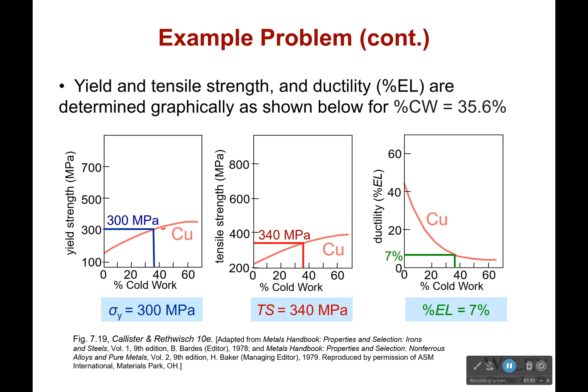All you do is go to your percent cold work, go up, and then go over. Or vice versa — if you wanted to know how much cold work you need to achieve a yield strength of 300 MPa, you would go to that point, drag the line over, go down from where you hit, and say that's roughly 35%. So there's definitely ways you could use these graphs — just because it's visual doesn't mean you can never use this.